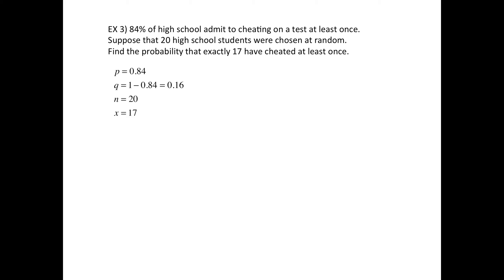So in this case, it's considered success if someone admits to cheating. Like I said, there's no real reason for calling it success. Anyway, then q is going to be 1 minus that. So in other words, 84% admit to cheating, 16% don't admit it. Then we've got 20 people. Find the probability that x equals 17.